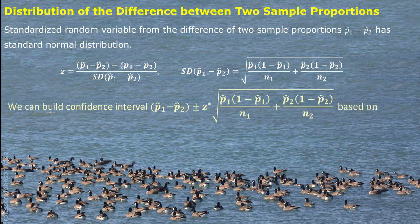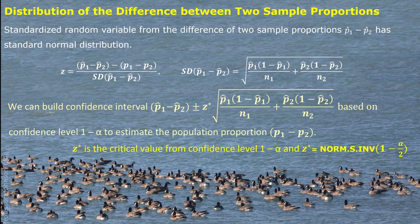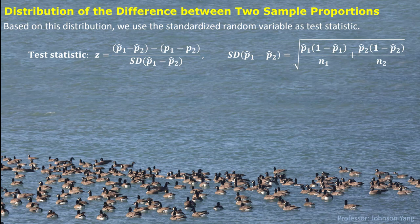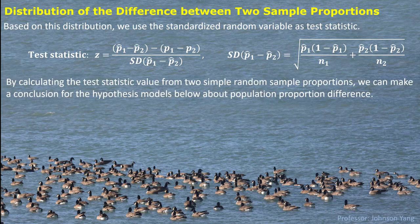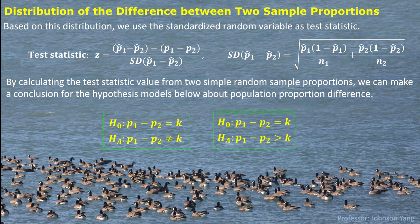In that case, we can build up confidence intervals with a very similar structure, used to estimate the population proportion difference. z-star is the critical value from confidence level 1 minus alpha, and can be easily found from an Excel function. We can also use this standardized sample proportion difference as a test statistic by calculating the value from two simple random sample proportions, making a conclusion for the hypothesis about population proportion difference — either two-tailed or one-tailed.